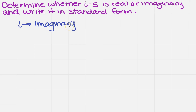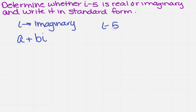And what does standard form say for an imaginary? Well, standard form is A plus Bi. So I need to rewrite this i minus 5 so that the number comes first and the imaginary part comes second. So this would be minus 5 plus i.